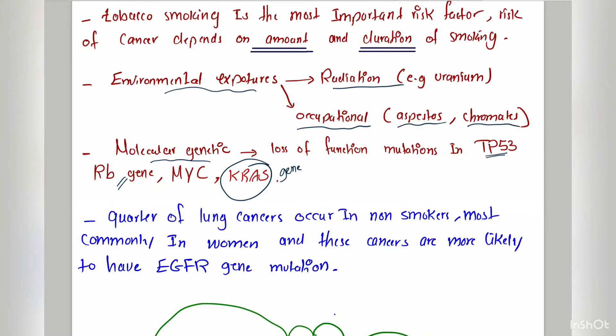About a quarter of lung cancers occur in non-smokers. Non-smoker lung cancer is mostly in women, and these cancers are more likely to have epidermal growth factor receptor (EGFR) gene mutation.